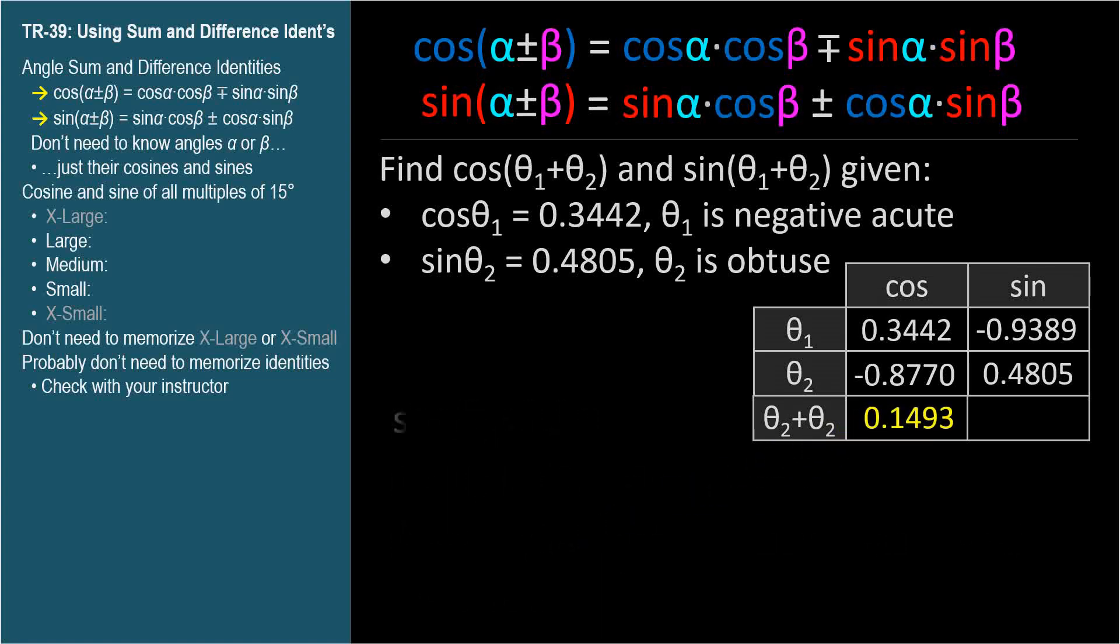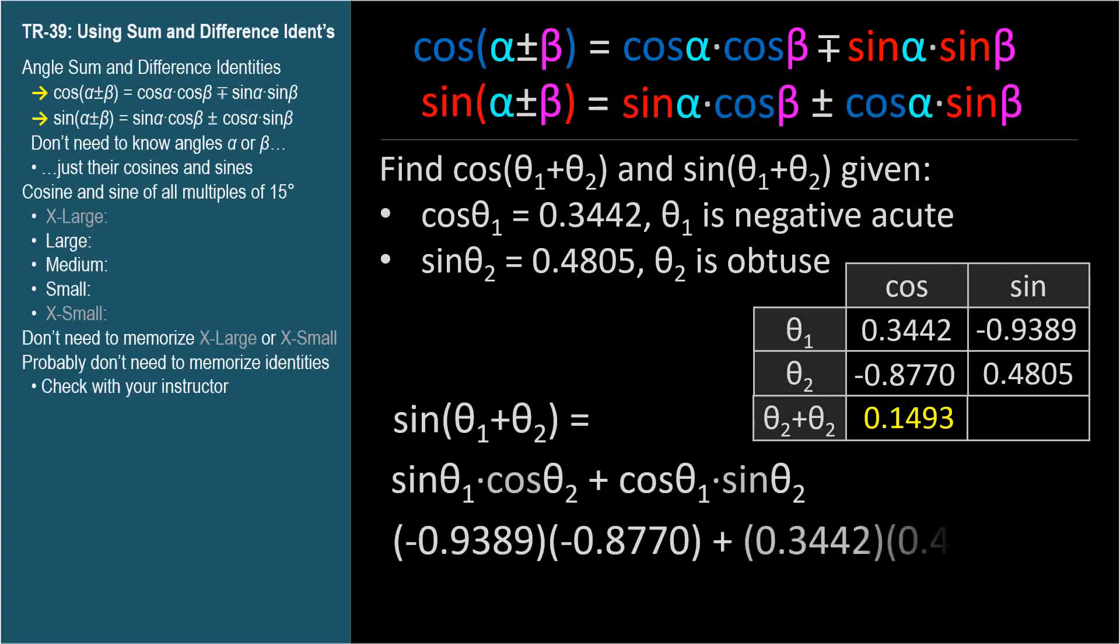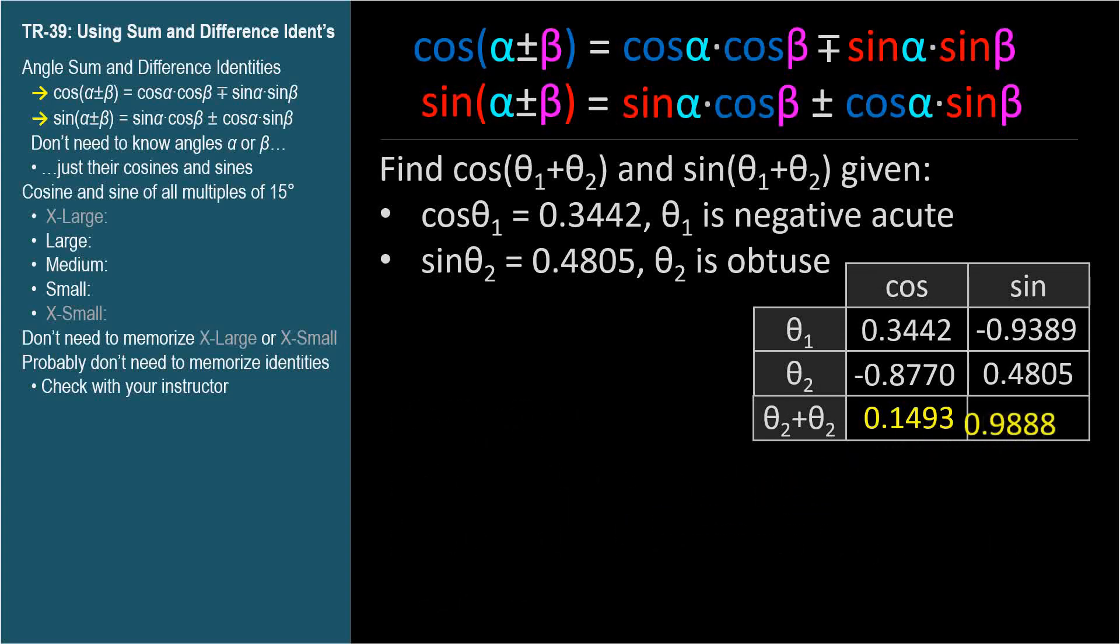Here's the identity for sine(θ₁ + θ₂). Substituting our known values, we get 0.9888, which is sine(θ₁ + θ₂). We can check our work using the Pythagorean identity. Cosine²(θ₁ + θ₂) + sine²(θ₁ + θ₂) equals 1.